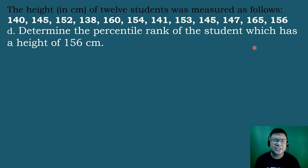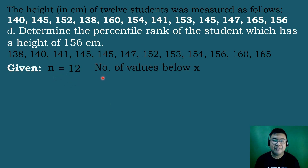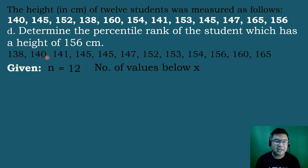Let's answer the last question: determine the percentile rank of the student which has a height of 156 cm. To get the percentile rank, step 1 is to arrange the data in ascending order. Step 2 is to identify the value of n, which equals 12. Then identify the number of values below x, where x equals 156 cm. Counting heights less than 156 cm gives us 9 values. So the number of values below x equals 9.